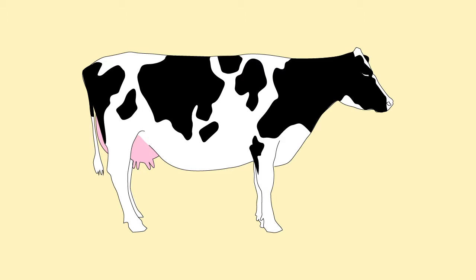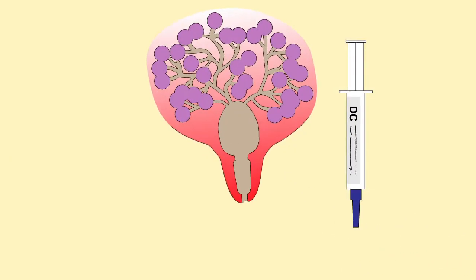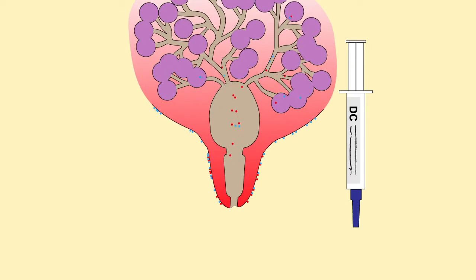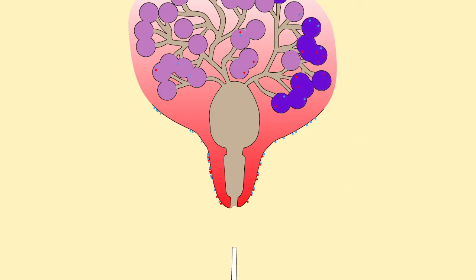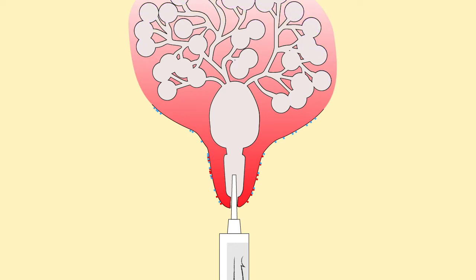Dry Cow Tubes are intramammary antibiotic treatment given at the end of lactation. They help eliminate existing infections and help prevent new infections during the dry period. Dry Cow Tubes are long-acting preparations and are different to the tubes used to treat mastitis.